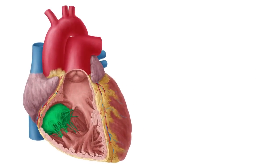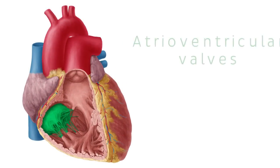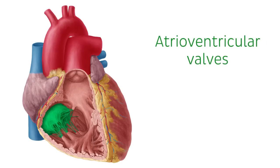The tricuspid valve, also known as the right atrioventricular valve, is one of two atrioventricular valves. As its name suggests, it has three separate cusps. It sits between the right atrium and right ventricle.